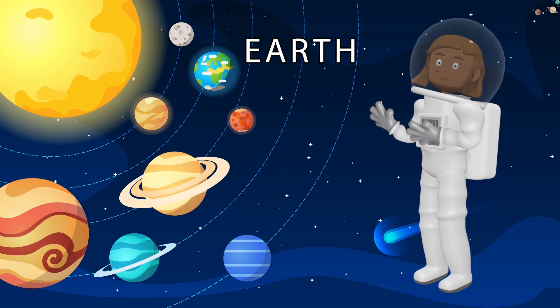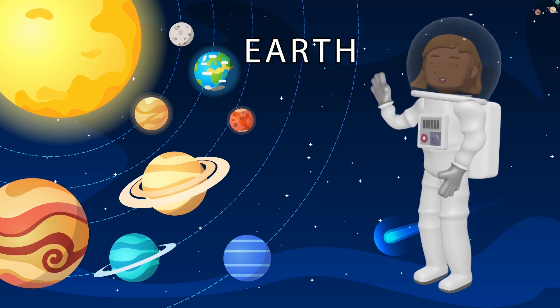Earth is covered with oceans, which make up about 70% of its surface! It's also the third planet from the sun! We're so lucky to call it home!